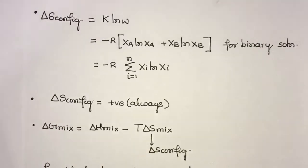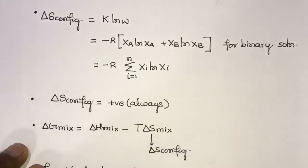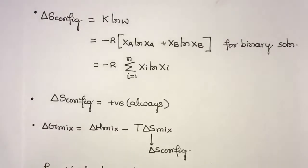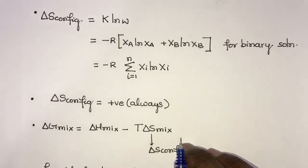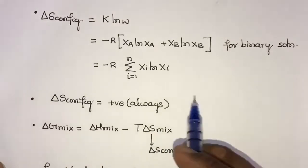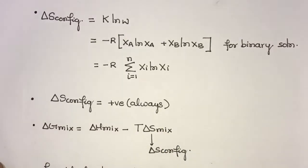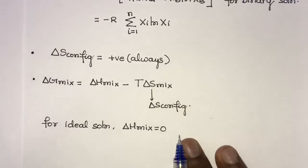The Gibbs free energy change upon mixing is ΔG_mix = ΔH_mix − T·ΔS_mix, where ΔS_mix equals ΔS_configurational. For an ideal solution, ΔH_mix is equal to zero. In general, ΔH_mix can be zero, negative, or positive depending on whether there is an attractive or repulsive force between components A and B. But for an ideal solution, there is no attraction or repulsion, so ΔH_mix = 0.